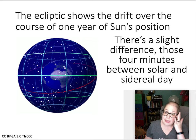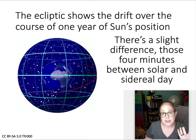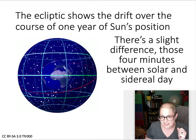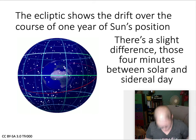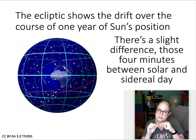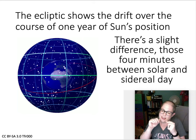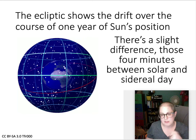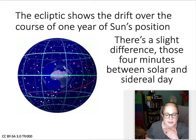The ecliptic shows that the Sun is drifting its position with respect to the background stars over the course of a year. That's because of a slight difference between a solar day and a sidereal day. A solar day is how long it takes the Sun to go around the sky from our point of view — 24 hours. The sidereal day is how long it takes a particular star to go around the sky — 23 hours and 56 minutes — a slight difference because the Earth has moved a little in its orbit and has to rotate a bit more to get the Sun back to the same position.